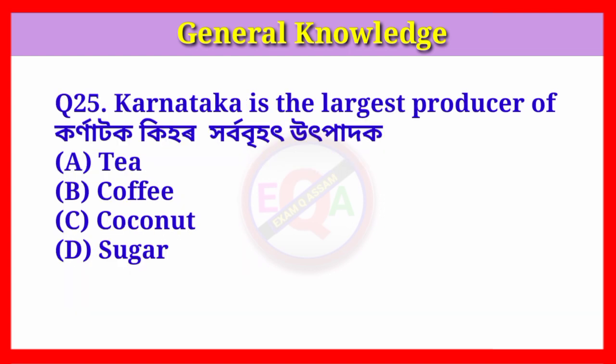Question number twenty-five: Karnataka is the largest producer of what? Answer: Option B, Coffee. Karnataka is the largest producer of coffee in India.